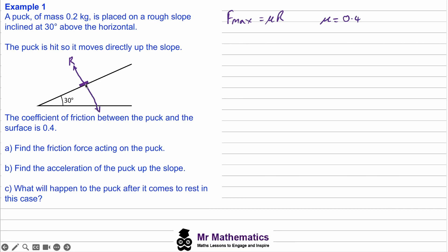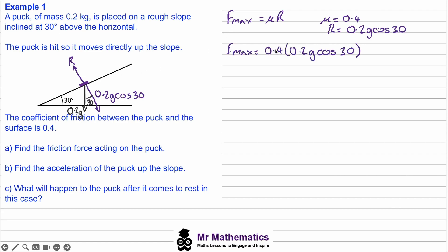We can work out the normal reaction by finding the force component perpendicular to the surface. This is the component of the weight, 0.2g, and the angle between the perpendicular and the weight force equals the angle of the slope. So this perpendicular force is 0.2g cos30, which equals the normal reaction R. The maximum friction is then μR = 0.4 × 0.2g cos30, giving 0.679 newtons.